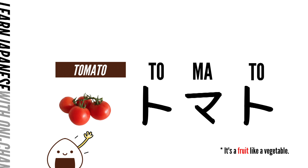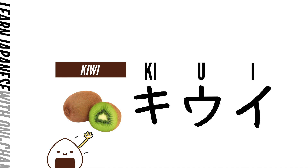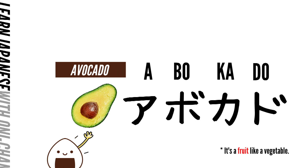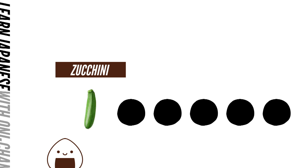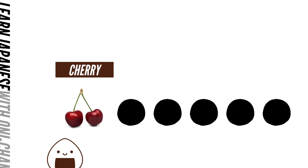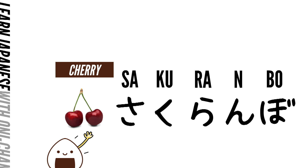Tomato — トマト. Kiwi — キウイ. Avocado — アボカド. Zucchini — ズッキーニ. Cherry — チェリー / サクランボ.